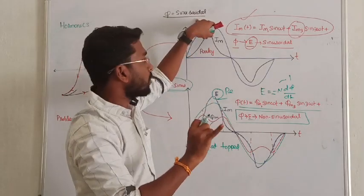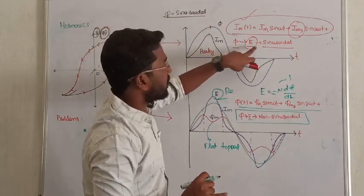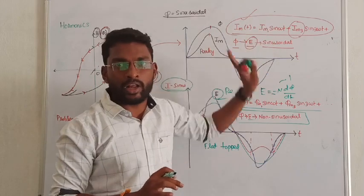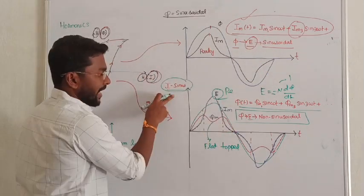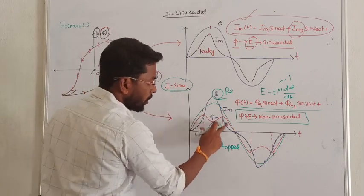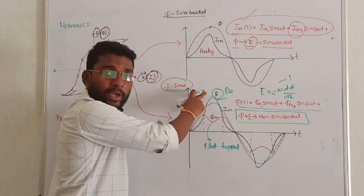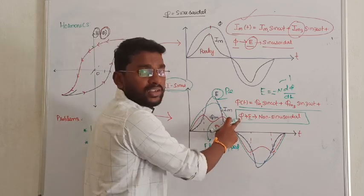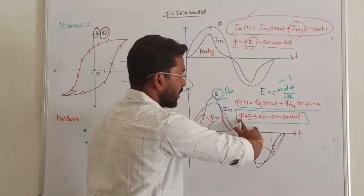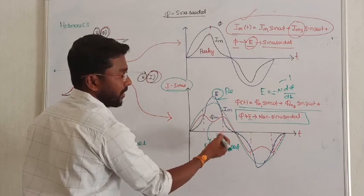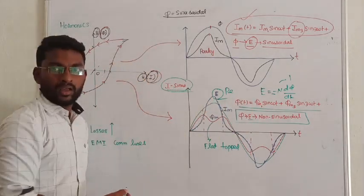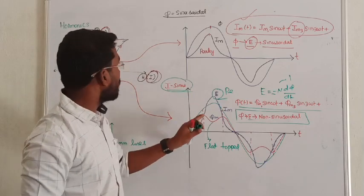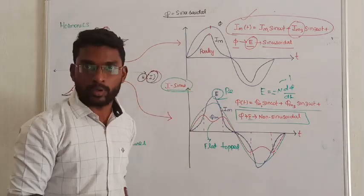To summarize: Case 1 — flux sinusoidal, current non-sinusoidal due to harmonic effects. Case 2 — current sinusoidal, flux non-sinusoidal, and consequently induced EMF also non-sinusoidal. That is all about harmonics in transformers and how transformers are affected by harmonics.